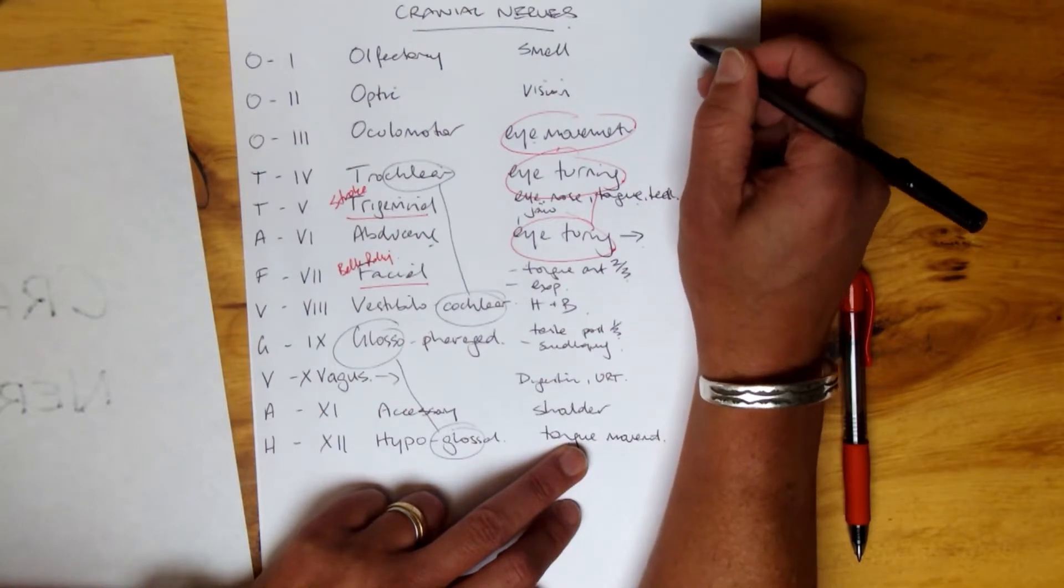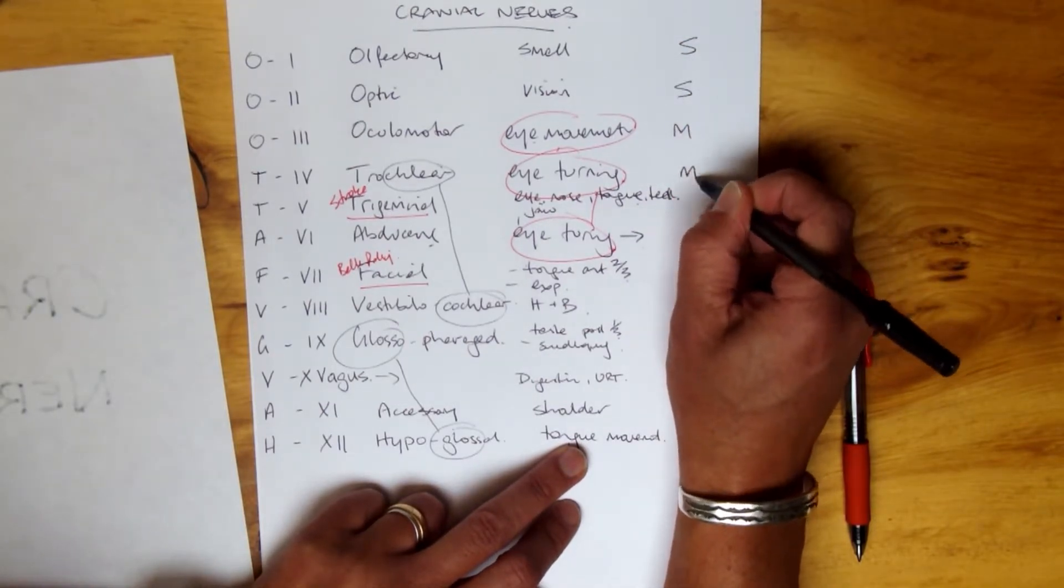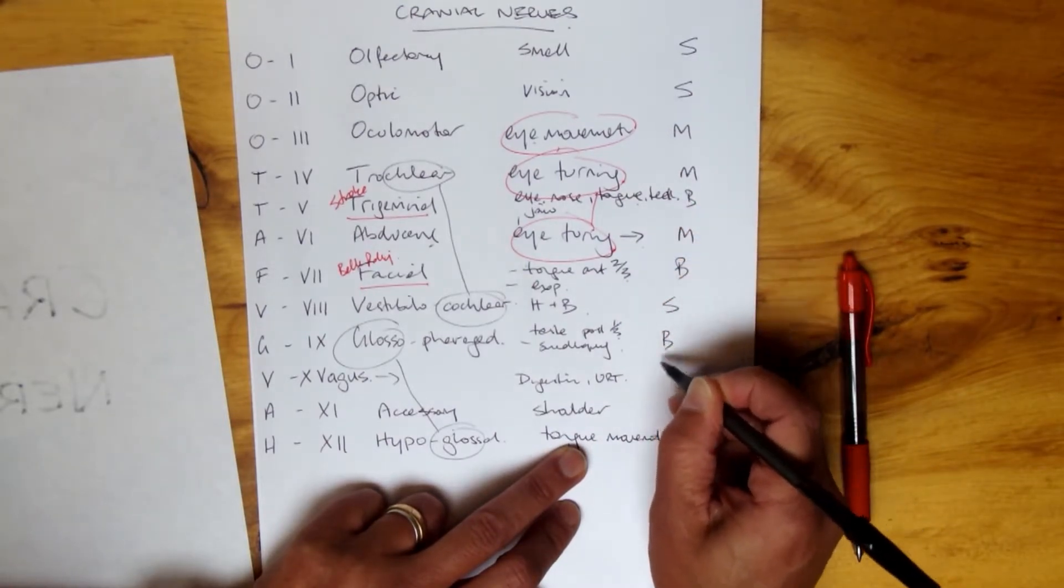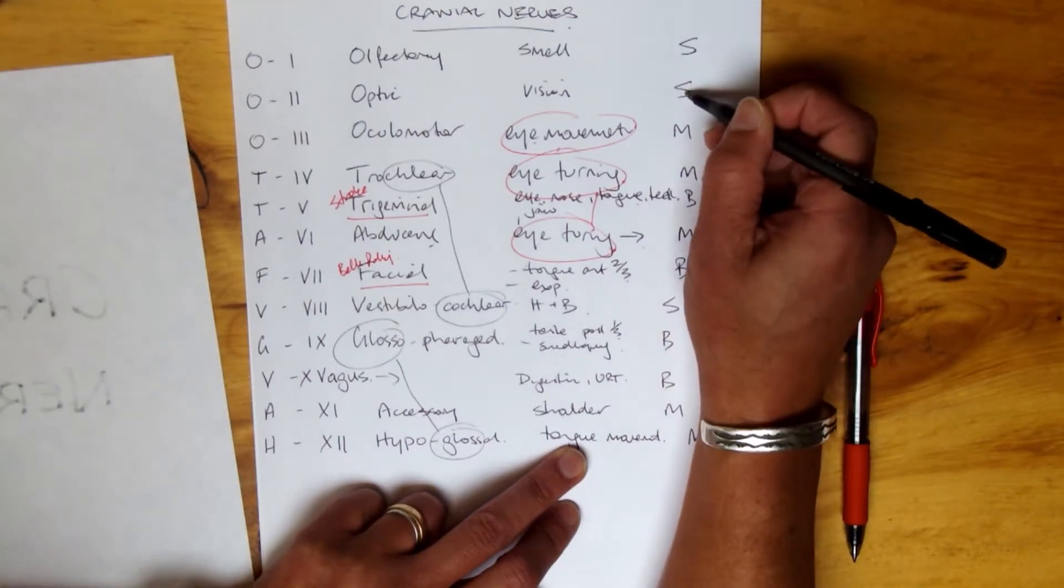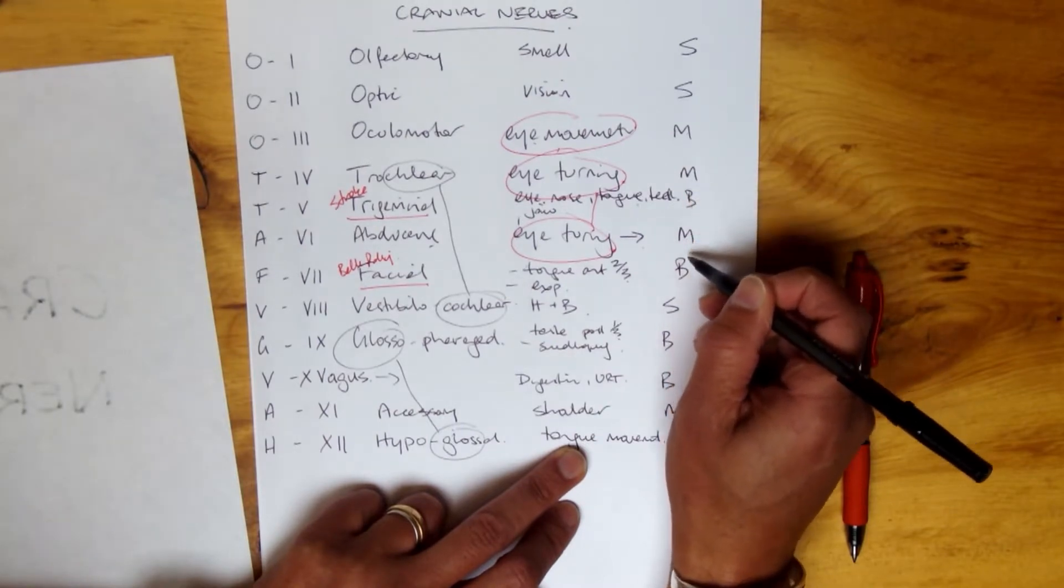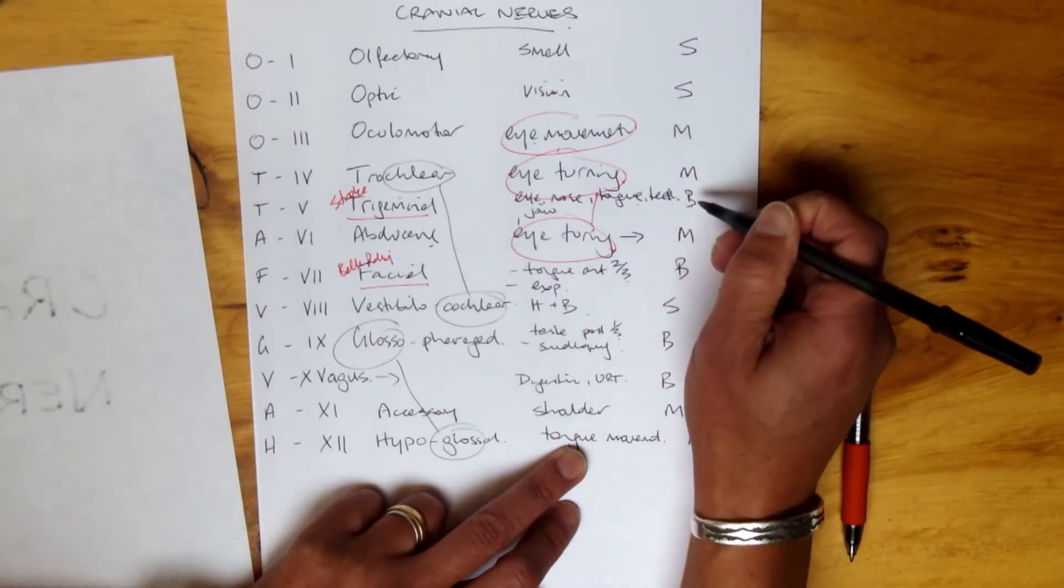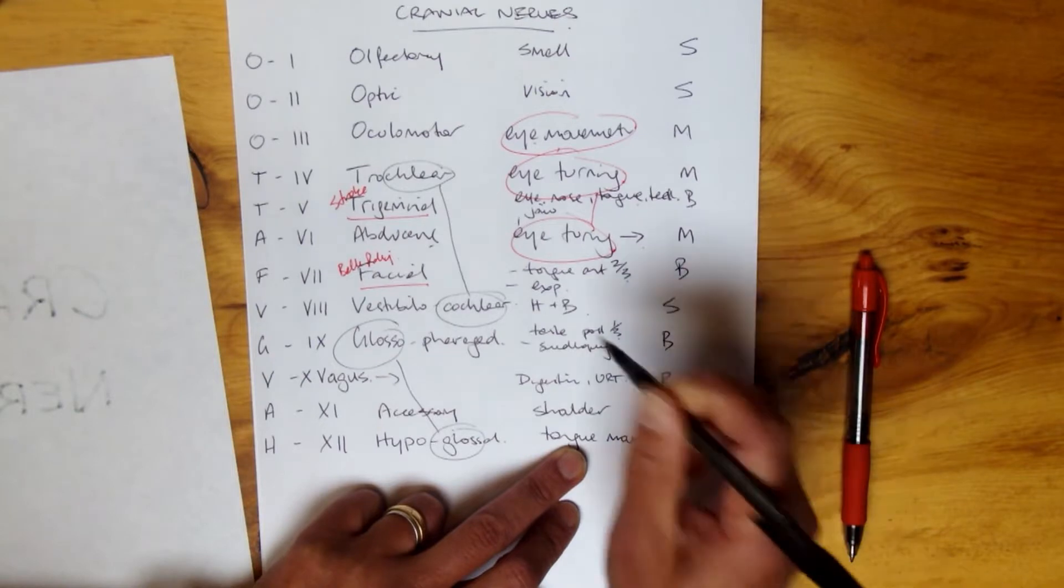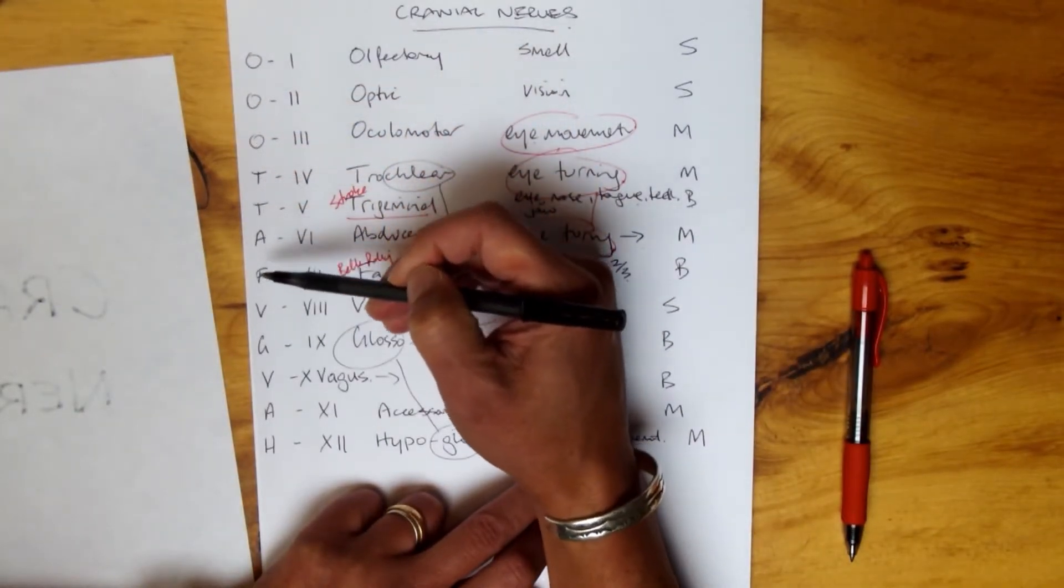Well, there's another mnemonic for that. Doesn't take you long to remember. So: sorry miss manners but my buddies say buying beer matters most. Sensory, sensory, motor, motor, both sensory and motor, motor, both sensory and motor, and so on. Sorry miss manners but my buddies say buying beer matters most. Offensive oranges of Tibet traded apples for Van Gogh's vague arthritic hippos.